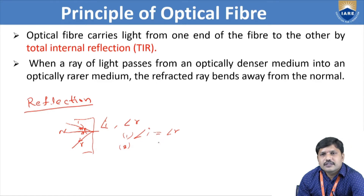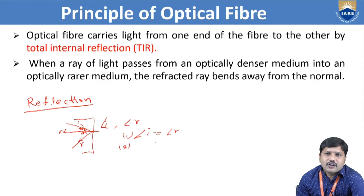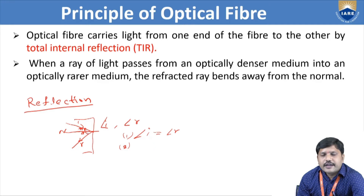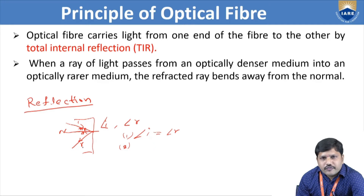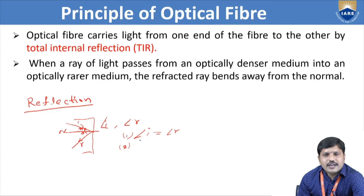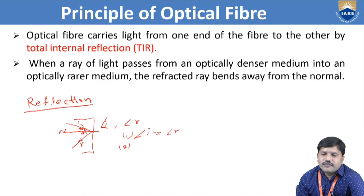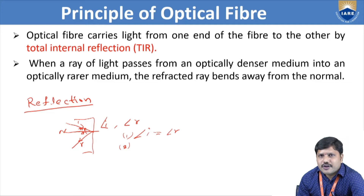The second law of reflection: the incident ray, normal line, and reflected ray — these three all exist in the same plane. The incident ray, normal line, and reflected ray lie in our same plane. This is the second law of reflection. So the concept of ray optics — reflection — is simply the bounce back of light at the boundary of the region, known as reflection.